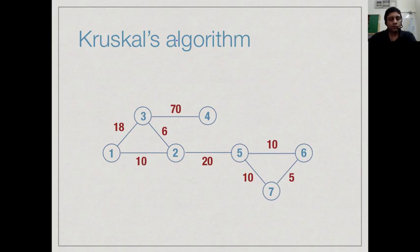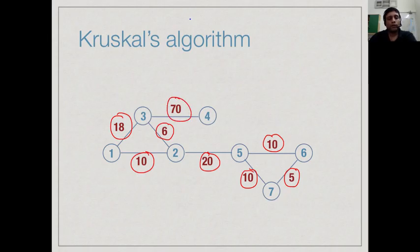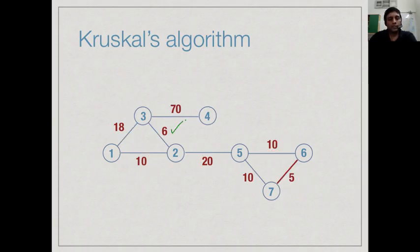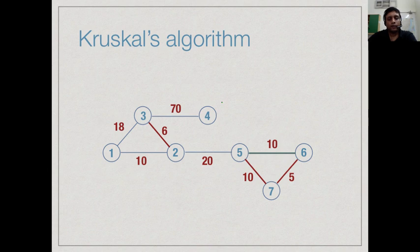Let us look at the same example we saw for Prim's algorithm. The smallest edge weight is 5, then 6, then three edges of weight 10, then 18, then 20, and then 70. We start with the edge of weight 5 and add it to our tree. The next one is 6, so we add 6. Now we have to pick one of the edges labeled 10 — we can pick any one. Suppose we pick one edge of weight 10. Now there is another edge labeled 10; suppose we pick it, but this one forms a cycle, so we cannot add it and discard it.